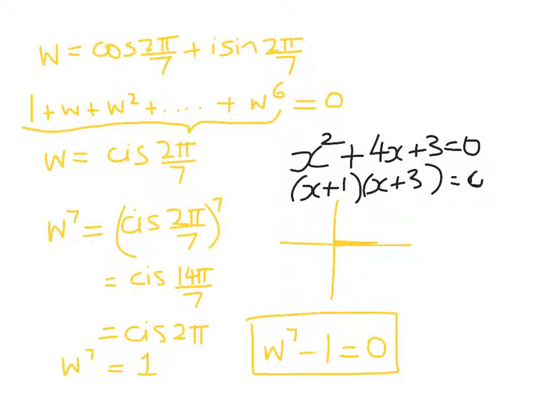So factorising that one is really easy. I'll get (x+1)(x+3). And so that means that either if this is 0 the whole thing is 0, or if this is 0 then the whole thing is 0. So I'm going to do something similar with my equation down here. We'll do that on a new slide.